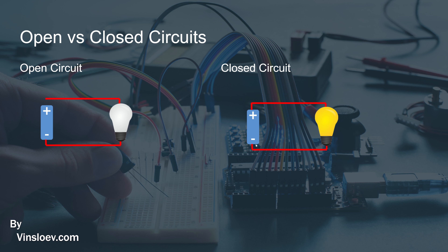When we have a closed circuit, the power can be transferred from the negative terminal onto our light bulb and then back to the positive terminal. With this flow, we will actually see that our light bulb is turned on. So whenever you switch something off — for example your flashlight or the light bulb in your lamp — what is actually happening behind the scenes is that you are going from a closed circuit to an open circuit, with something physically disabling this circuit.